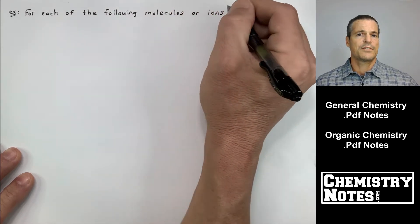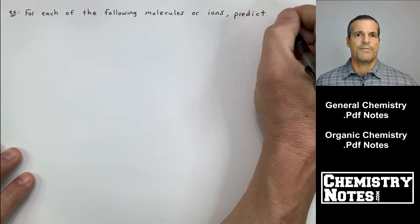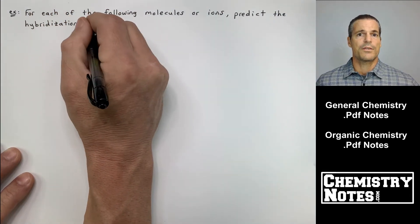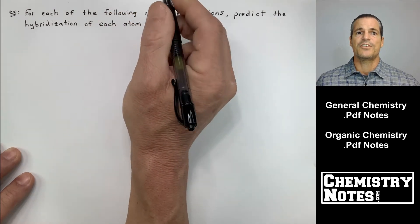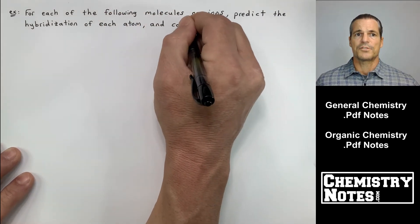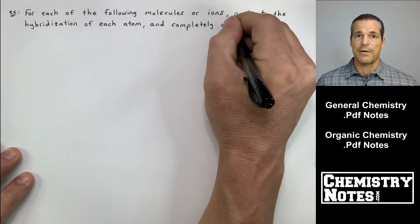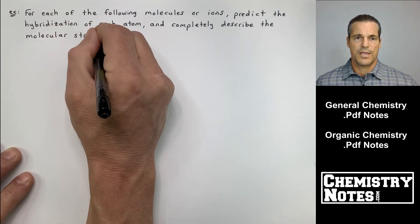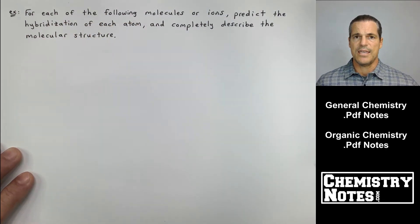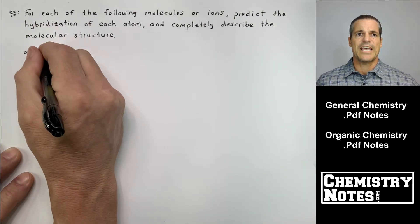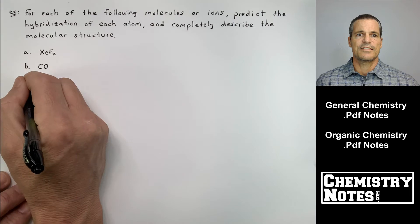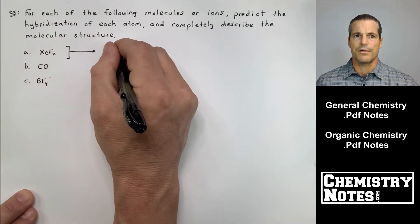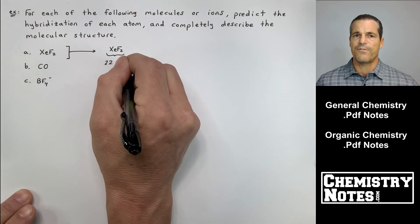All right. So this is our fourth example of our practice problem video. And it says for each of the following molecules or ions, predict the hybridization of each atom and completely describe the molecular structure. So I've got three examples. I've got an A, a B, and a C. First example is XeF2. Second is CO, that's carbon monoxide. And then the third one, BF4 minus.